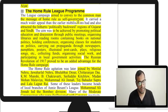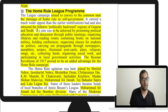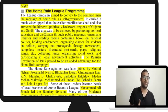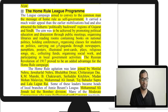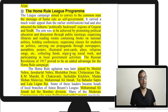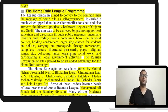Besant's Home Rule League aimed to convey to the common man the message that home rule meant self-government. They also wanted to attract politically backward regions of Gujarat and Sindh that had shown less participation. This was to be achieved through political education, public meetings, organizing libraries and reading rooms. They tried everything available for mass communication — postcards, pamphlets, posters, newspapers, plays, religious songs, and collecting funds.